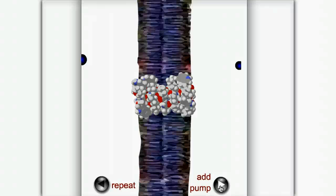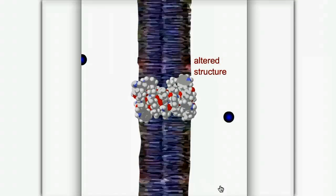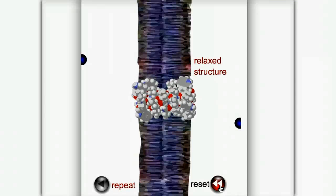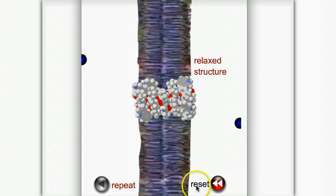Finally, there are pumps. These are integral membrane proteins that can move molecules in a defined direction across the membrane. Pump proteins are actively driven by coupling to thermodynamically favorable reactions, often the hydrolysis of ATP to form ADP and phosphate.